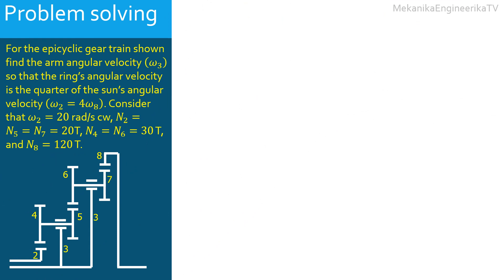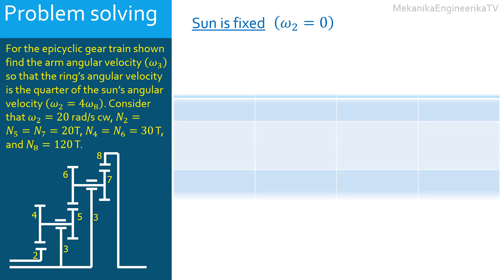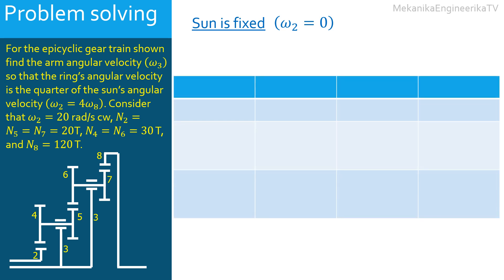In a second step, we'll assume that the sun is fixed, or ω₂ = 0. We would like to express ω₈ in terms of the arm's angular velocity ω₃. To this purpose, we will use the tabular method. This method is based on the superposition principle, as the problem is linear, and it will be divided into two sub-steps. The desired results will be the total, or sum, of the two sub-steps.